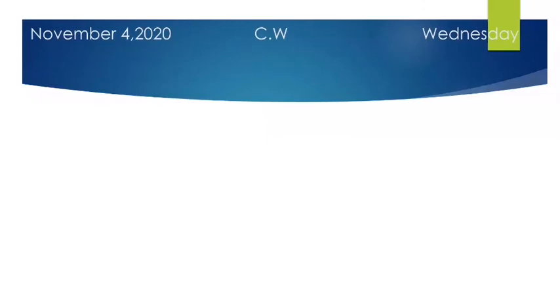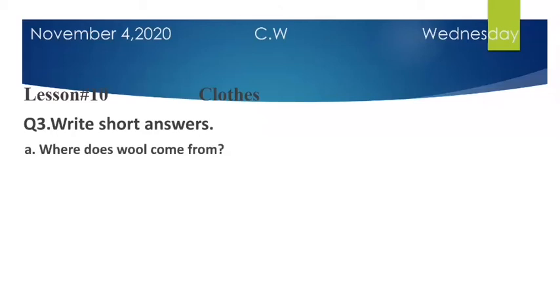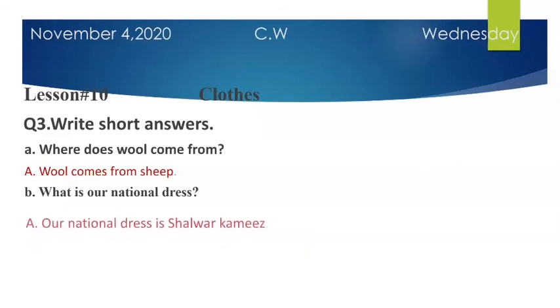Today start question number 3, write short answers. A is where does wool come from? Answer is wool comes from sheep. B is what is our national dress? Answer is our national dress is Shalwar Kameez.